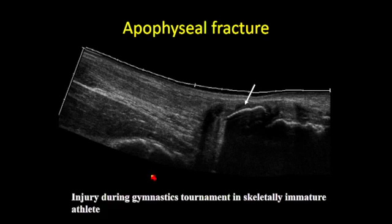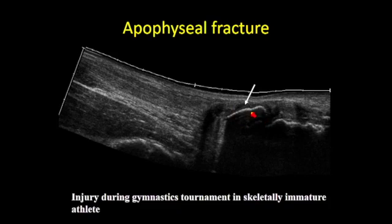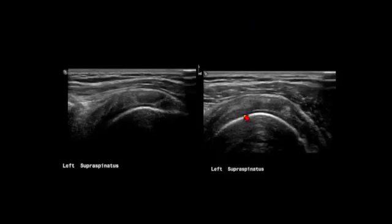Tendon tears also occur at sites of weakness. In children, the weak point is the growth plate rather than the tendon itself. In this high-level gymnast with acute retro-calcaneal pain during a floor exercise, the tendon remained intact but the apophysis was avulsed through the growth plate — the actual site of rupture. Additionally, tendon tears may be filled with complex soft tissue, granulation tissue, or scar tissue, making them difficult to visualize directly.